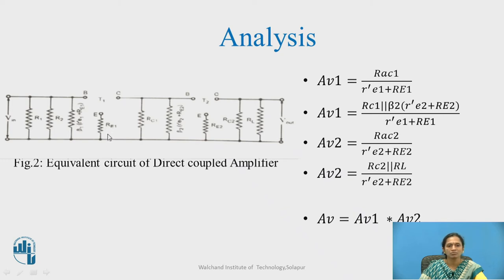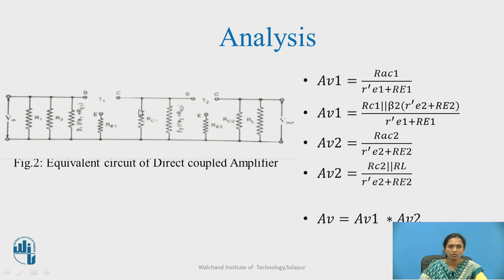RE1 is the emitter resistor. The equivalent emitter resistance is beta1 × RE1' plus RE1. This represents the equivalent emitter resistor. The load of the first stage is in parallel with the input impedance of the next stage. In this way, we can calculate the value of voltage gain in terms of resistances.